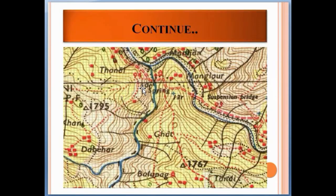This is the topographic sheet. Here you can see the contour lines in zigzag patterns. Contour lines actually depict elevation on the ground. This shows 1795 meters as the ground elevation, so you can say that this is a hill area. When you move towards this side, this is the plain area.